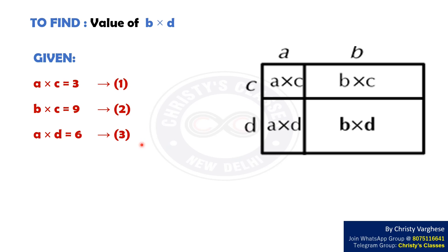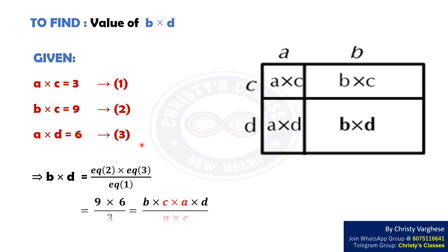From these equations, we can see that B into D equals equation 2 into equation 3 divided by equation 1. That is 9 into 6 by 3, which equals 18.